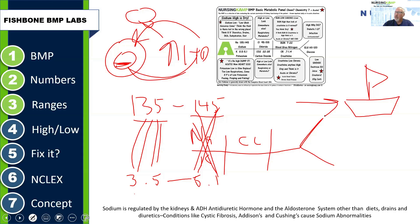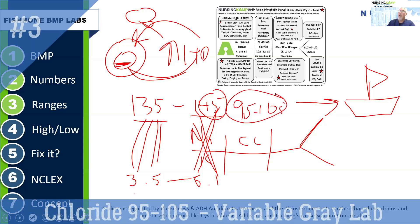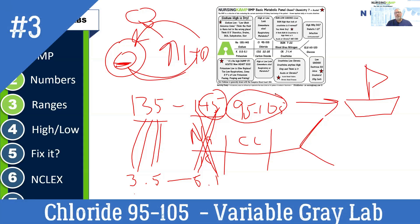Chloride is generally the boat — it means something's going on with the patient, but it doesn't necessarily mean call the doctor. Look at the underlying cause. For the numbers: I add the 4 and the 5 together, that becomes 9, then I put 10 there — so 95 to 105 is your chloride. High or low, look somewhere else: diabetes or respiratory.